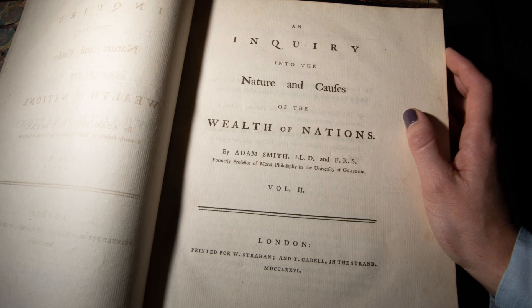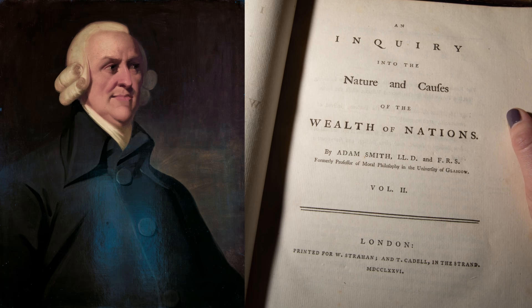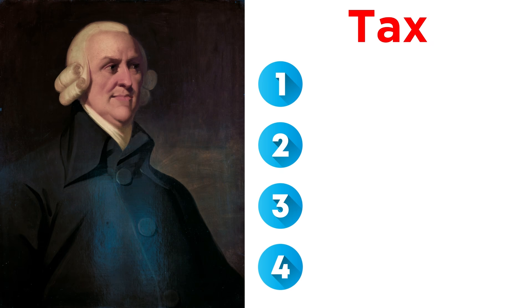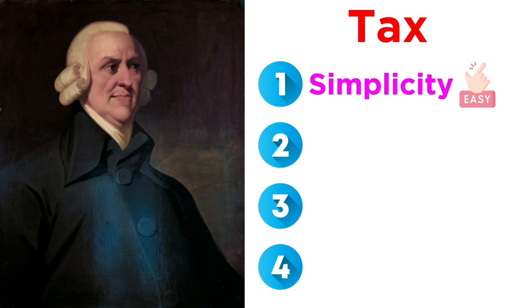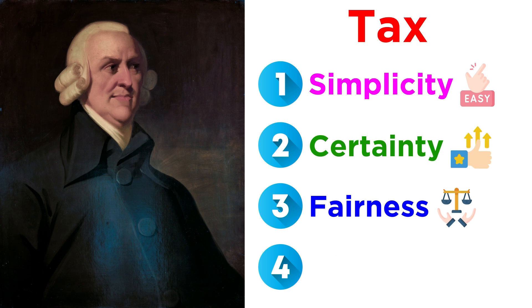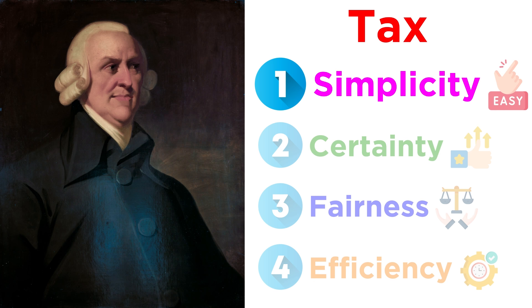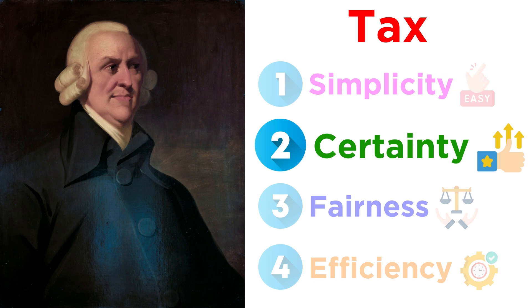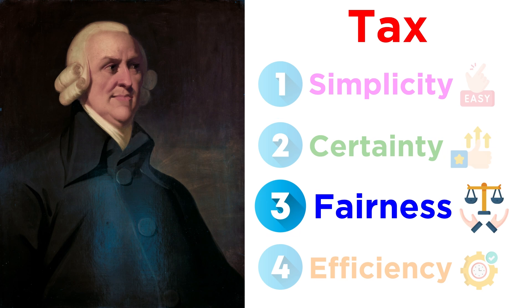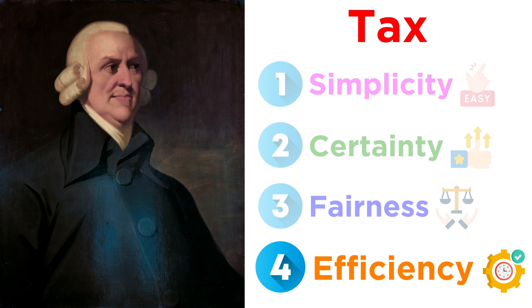In his influential book The Wealth of Nations, Adam Smith argued that a tax should have four characteristics: simplicity, certainty, fairness, and efficiency. In other words, it should be easy and convenient for taxpayers to pay; it should be certain that taxpayers know how and why the taxes are being collected; it should be compatible with taxpayers' conditions, including their ability to pay and still pay their own bills; and it should be efficient for governments to collect.